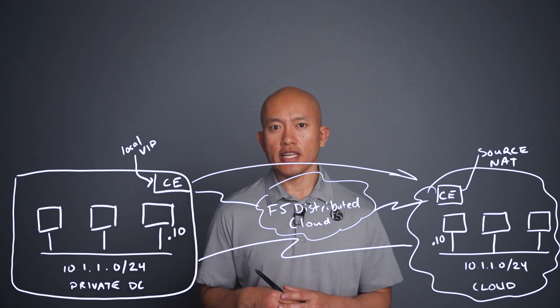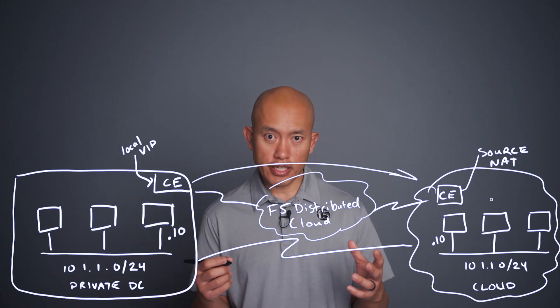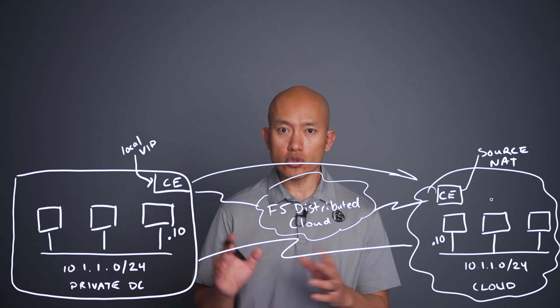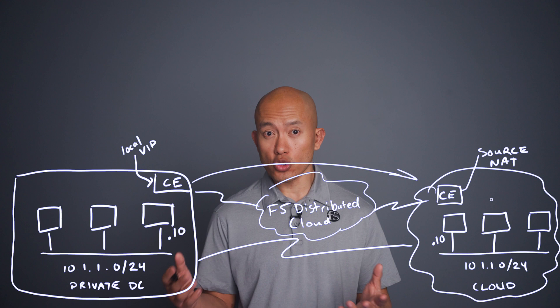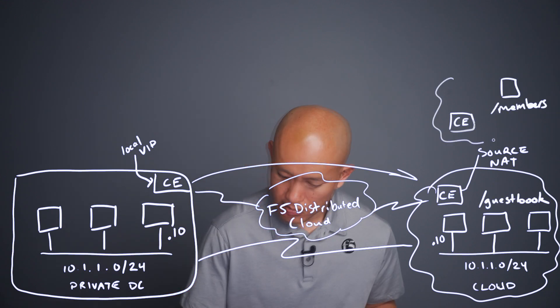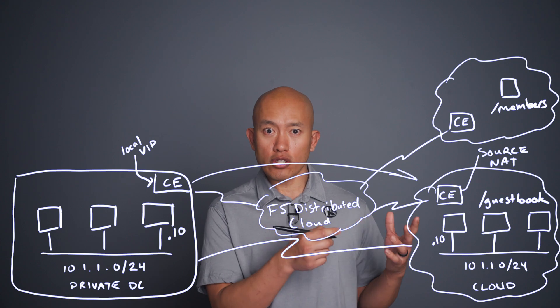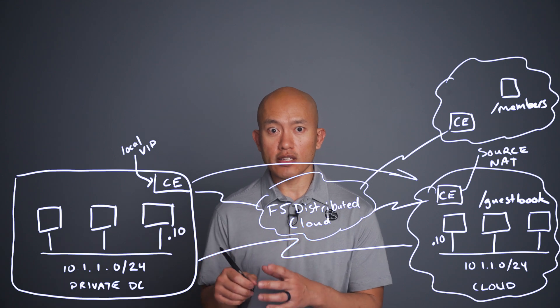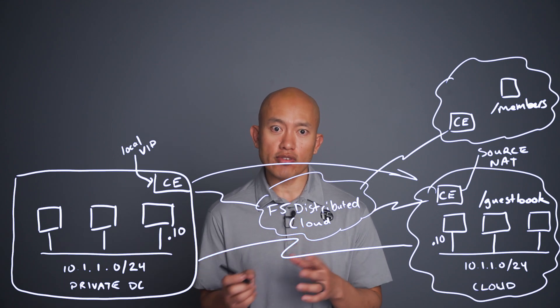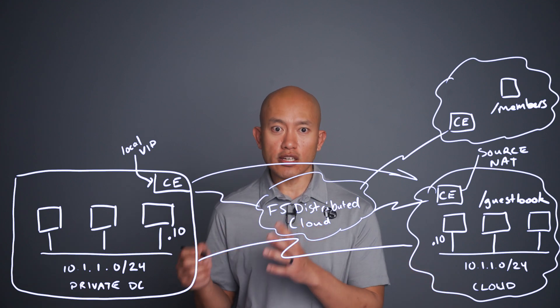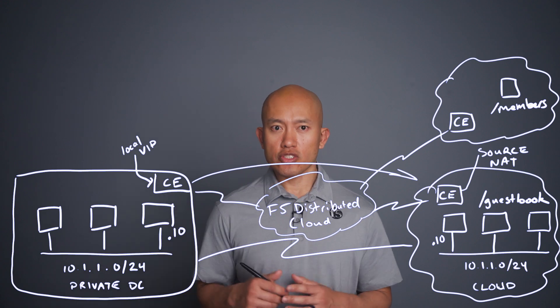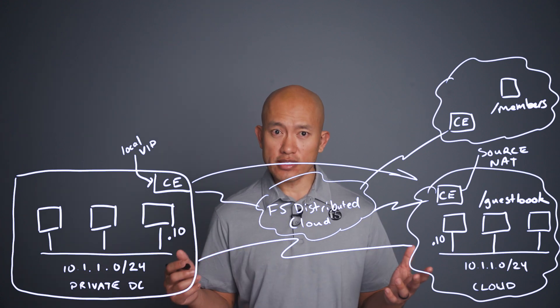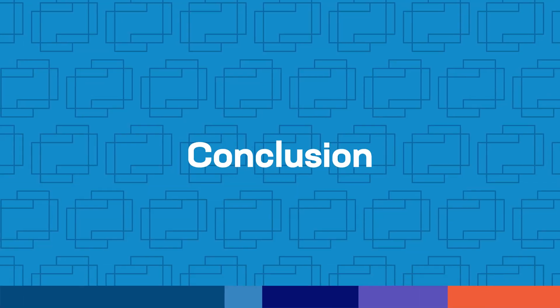Once you have these customer edges deployed, you can actually start incorporating layer 7 features. In this scenario, if you have different portions of the application that could be broken up, they could be moved to different sites and traffic directed based on things like the URI. So, slash guestbook could be at one site and slash members at another. Your same virtual IP can have a rule for slash guestbook directing traffic to one site, and another rule directing slash members to the other site. There could also be other things like incorporating layer 7 security policies. I hope this explains what IP overlap is and how you can solve for it in a couple of different ways.